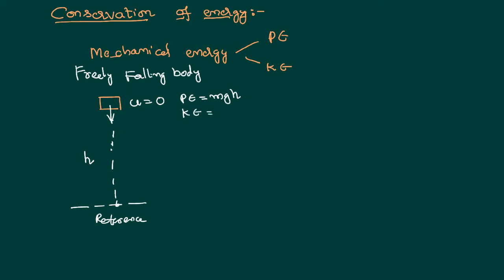Being velocity equal to zero, its kinetic energy is equal to zero. If we consider somewhere in the journey when it has reached a certain point — say, at a height h1 from the ground — its potential energy will be less because it has less height from the ground. When compared with the previous case, it has less potential energy, but by the time it has reached that point, it acquires a velocity and is also having kinetic energy.